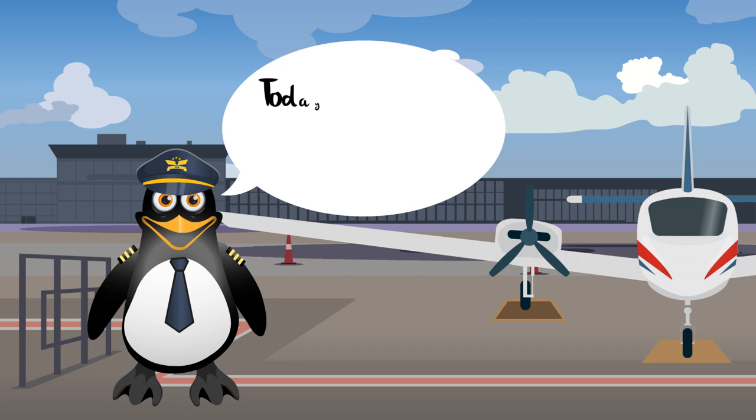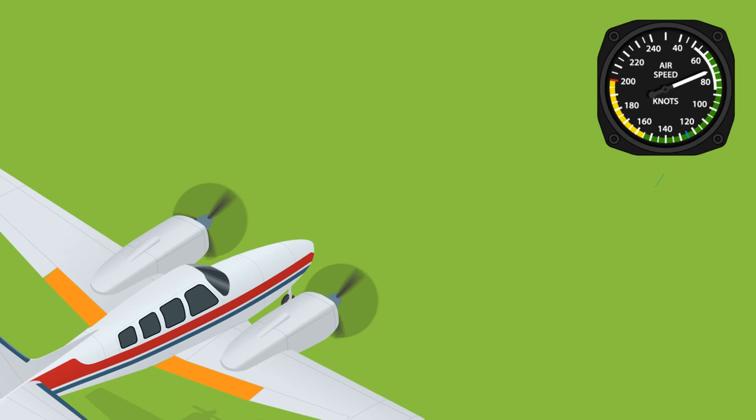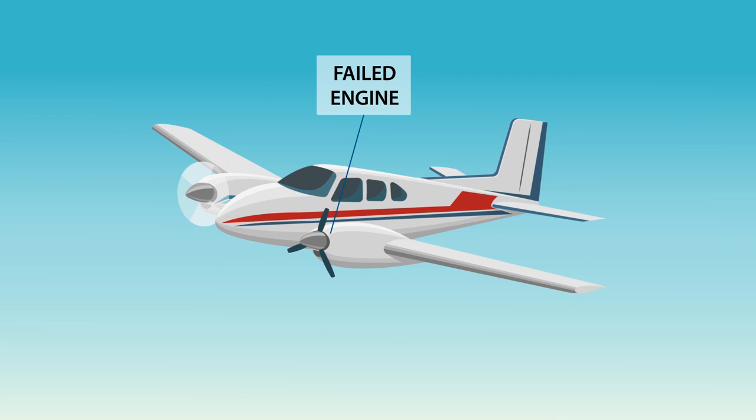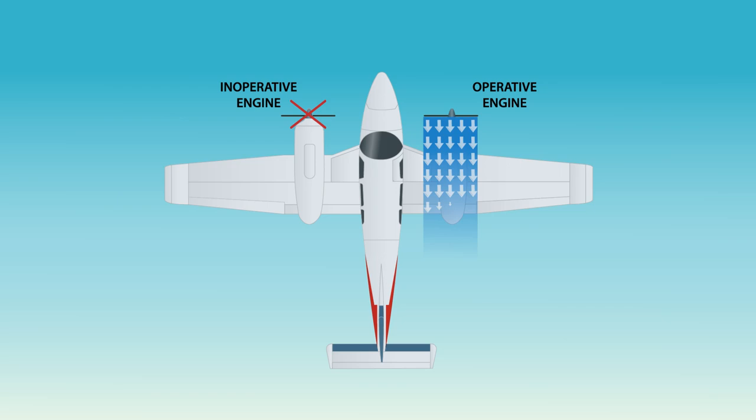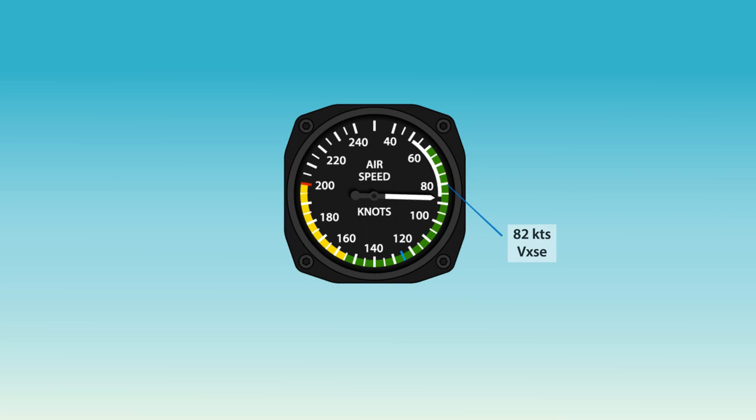Welcome to the ACE Pilot Academy. Today we will be learning about multi-engine V-speeds. Pilots of single-engine aircraft are already familiar with the many performance speeds and their definitions. Multi-engine aircraft have additional V-speeds to account for safe operation when one of its two engines is not operating in flight. This situation is known as one-engine inoperative, referred to as OEI. The additional V-speeds for multi-engine aircraft cater to the safe operation during OEI conditions.